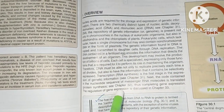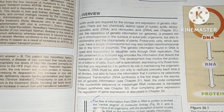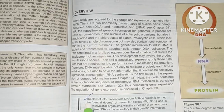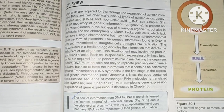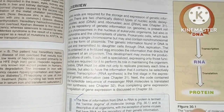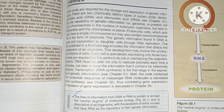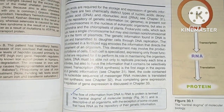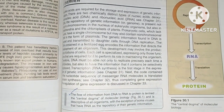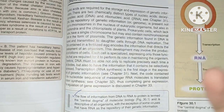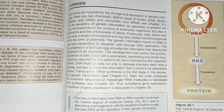An important difference between prokaryotes and eukaryotes is that prokaryotes have no true nucleus. Instead, DNA is present in a region called the nucleoid, which is a chromatin-dense area in the cytoplasm. There is no nuclear membrane, but there is chromatin structure in the cytoplasm. A single chromosome is present in prokaryotic cells, whereas in eukaryotic cells a proper nucleus is present.